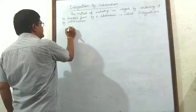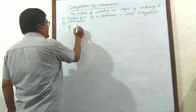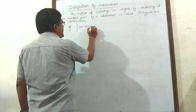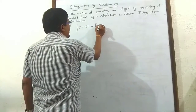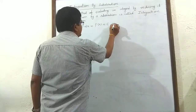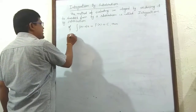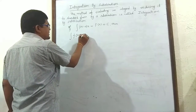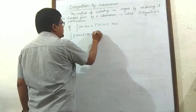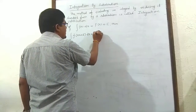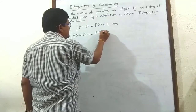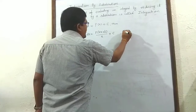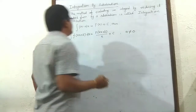Let's say, if the integral of f(x) dx equals F(x) plus c, then the integral of f(ax + b) dx equals F(ax + b) upon a, plus c, where a is not equal to 0.